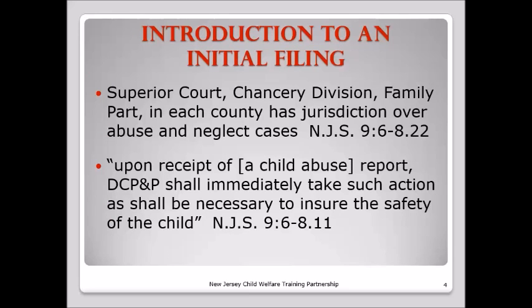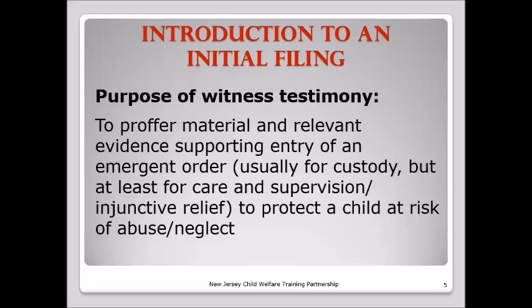An initial filing happens in the Superior Court Chancery Division family part. Every county has a family part which has jurisdiction over abuse and neglect cases. The statute tells us that whenever a child abuse report is made, the division shall immediately take action that shall be necessary to ensure the safety of the child. And that action happens in a courtroom through the use of what's called an initial filing. The purpose of testimony in initial filings is to provide material and relevant evidence that supports the entry of an emergent order. There's an emergency that needs to be taken care of — a high-risk situation. There are usually orders requesting custody, but they can be for care and supervision or injunctive relief. Injunctive relief might include barring one parent or the other from the family home, limiting access to the family home. The overall goal is to protect the child at risk of abuse or neglect.